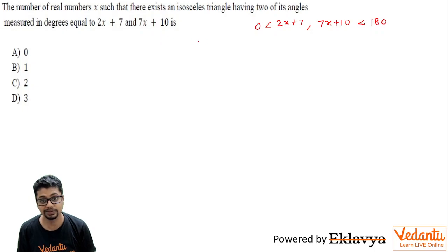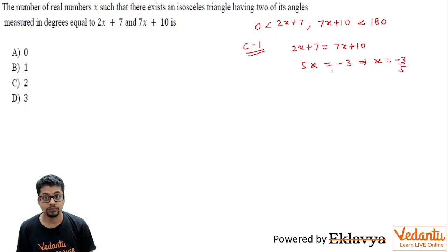For these to be angles of an isosceles triangle, one possibility is, let me call it case 1: these two angles turn out to be equal angles. In which case you have 5x equal to minus 3, x equal to minus 3 by 5. So for x equal to minus 3 by 5, both of them are equal.